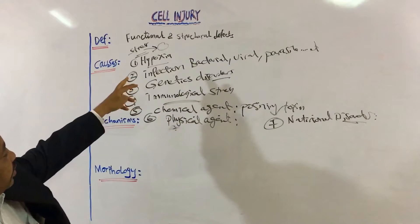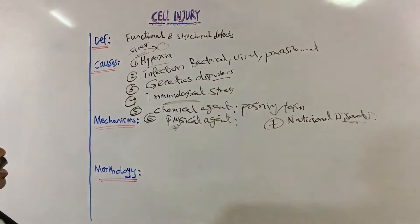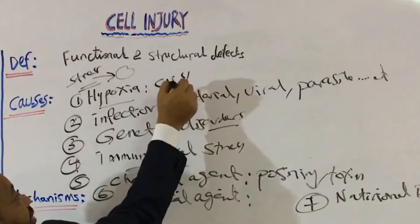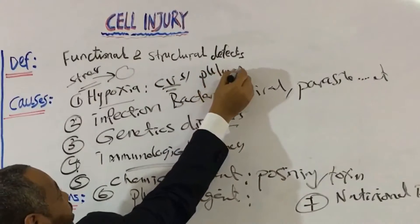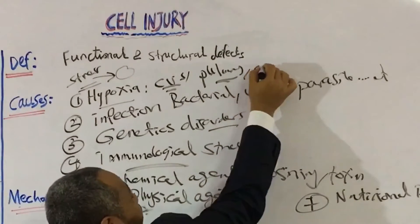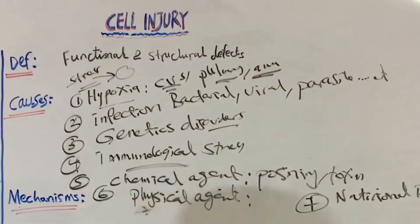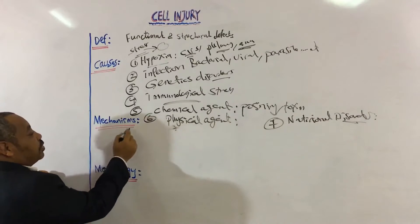Hypoxia specifically can be caused by cardiovascular diseases, pulmonary diseases — lung disorders like pneumonia — and anemia. These are very important causes for hypoxia.